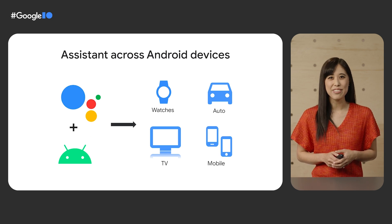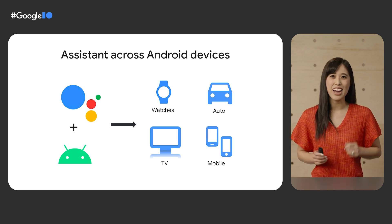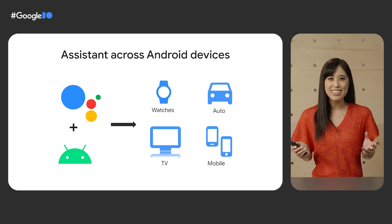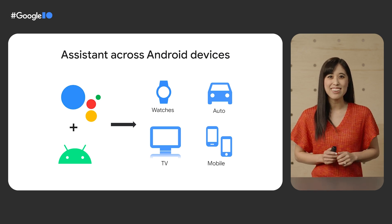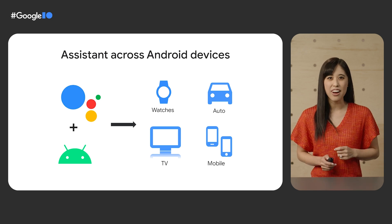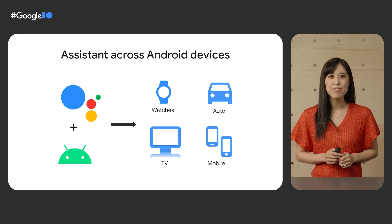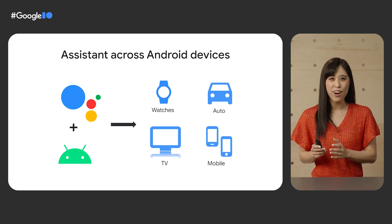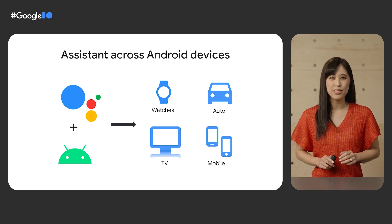Now let's talk about what this means for developers. It's never been easier to integrate your Android apps with Google Assistant by taking advantage of Android shortcuts and media APIs. These enable fast, natural entry points to content and features in not only your mobile app, but also Android TV OS, Android for cars, and Wear OS apps.